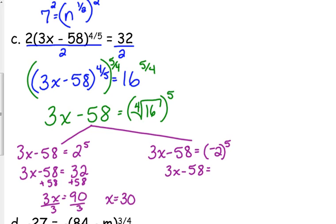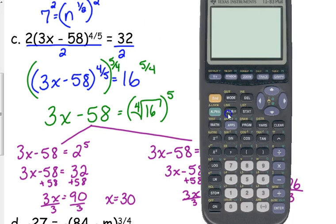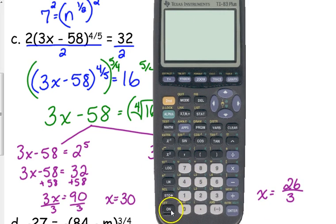For the other equation, we've got 3x minus 58 is equal to negative 32. We solve it the same way, but when we add 58, we're adding it to negative 32. So that's like subtracting 32 from 58. So that's 26. And 26 is not evenly divisible by 3. Very, very important that we check these solutions.